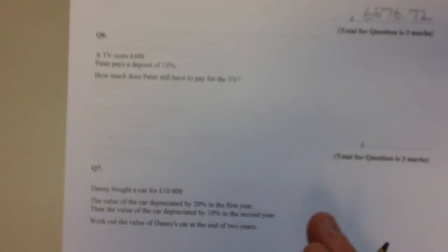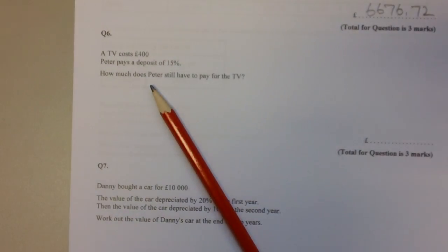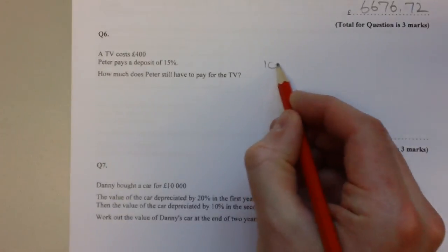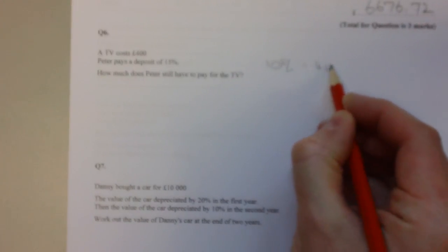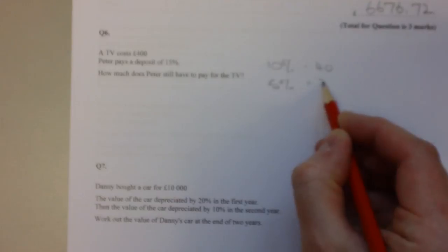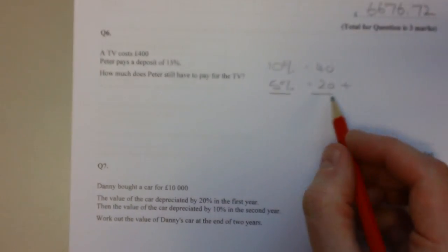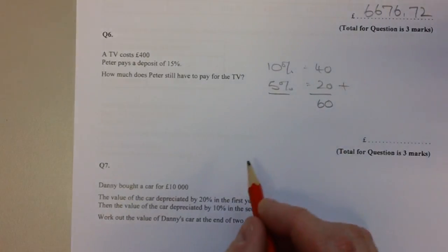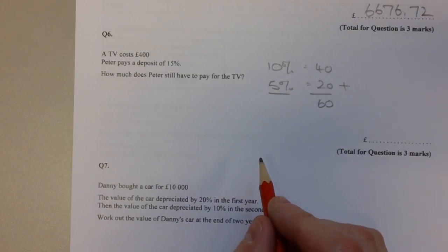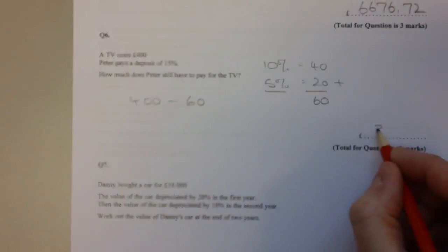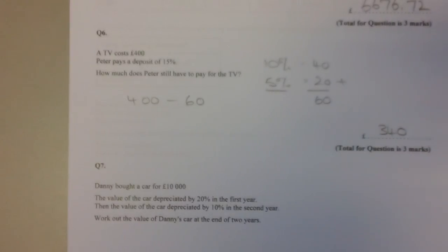Question number six: A TV costs £400. Peter pays a deposit of 15%. How much does Peter still have to pay for the television? We need to work out 15% of £400. 10% will be £40, 5% is half of that so it's £20. 10% and 5% make 15%, so 15% is £60. That's how much money he pays for his deposit. How much does he still have left to pay? £400 take away the deposit is £340.